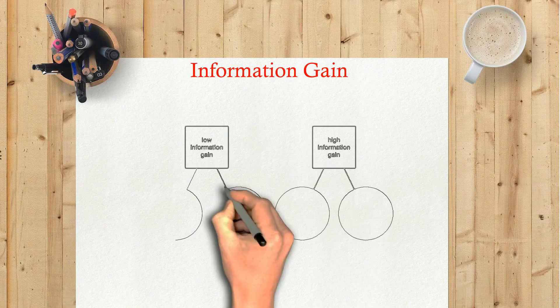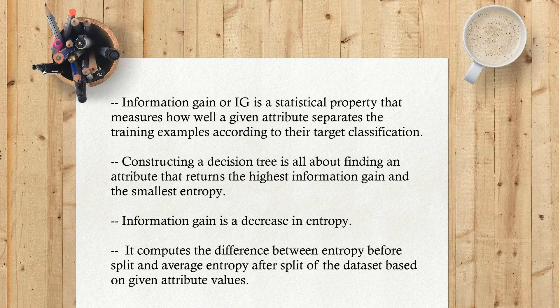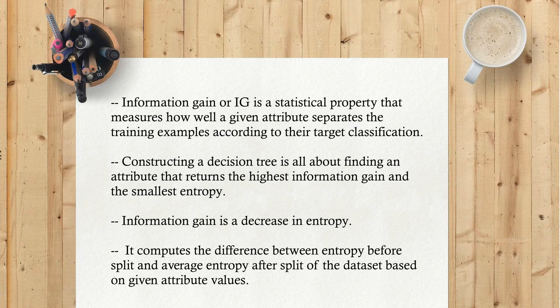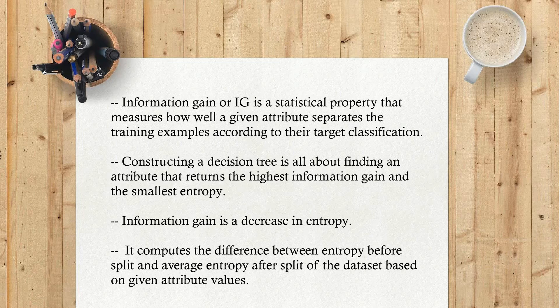Information gain, or IG, is a statistical property that measures how well a given attribute separates the training examples according to their target classification. Constructing a decision tree is all about finding an attribute that returns the highest information gain and the smallest entropy. Information gain is a decrease in entropy. It computes the difference between entropy before split and average entropy after split of the dataset based on given attribute values.